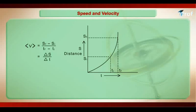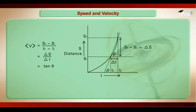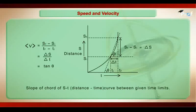If you look at the graph, this is the initial position and this is the final position. Join these two points. If this angle is theta, then this angle will also be theta. So this average speed between T_initial and T_final can be expressed as tan(theta), which is the slope of the chord of the distance-time curve between the given time limits T_initial and T_final. This is average speed.